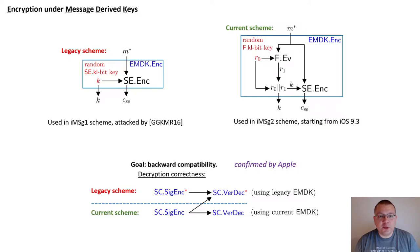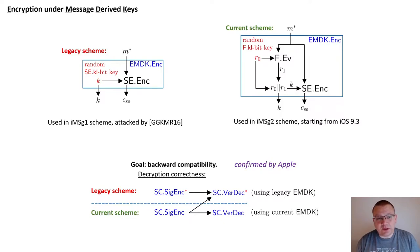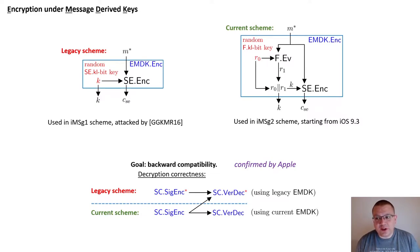When analyzing the current scheme, we also attempted to find better ways to fix the legacy scheme while preserving backwards compatibility. In the end, we could not come up with a backwards-compatible scheme that would provide security better than that of the current iMessage scheme.